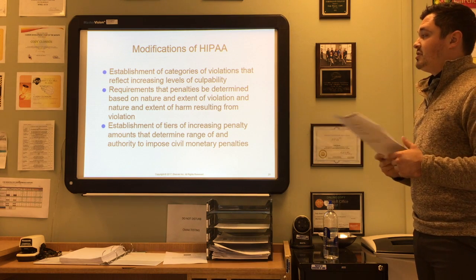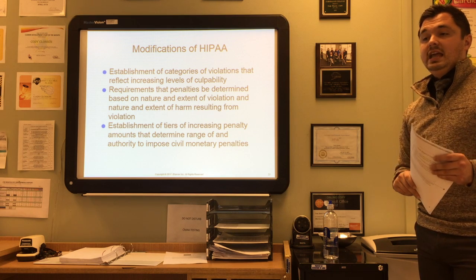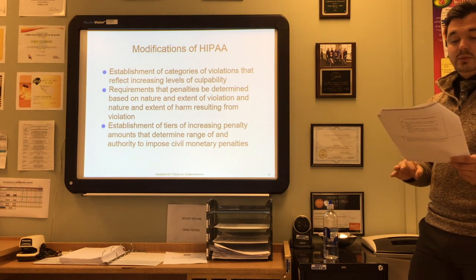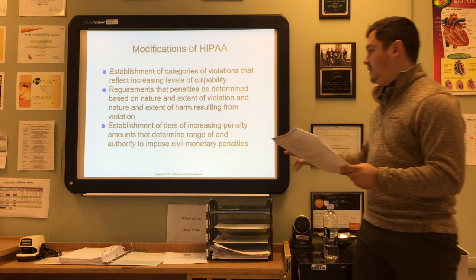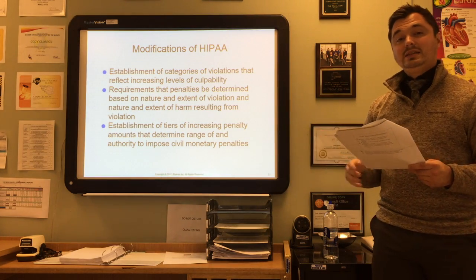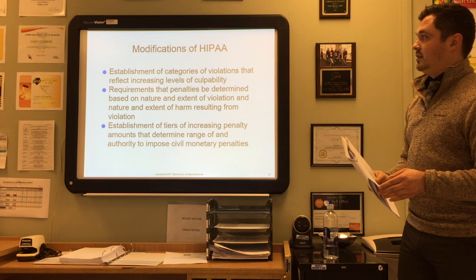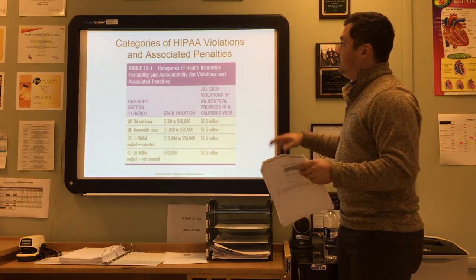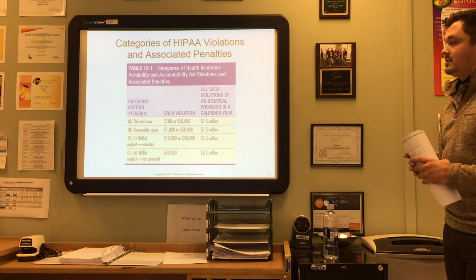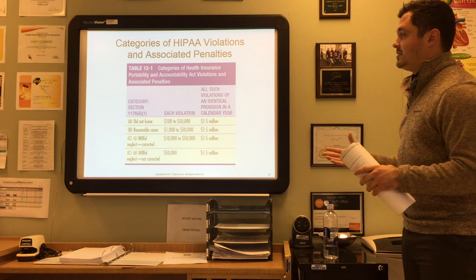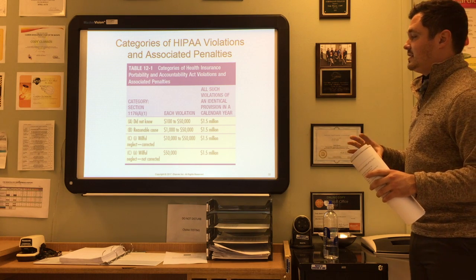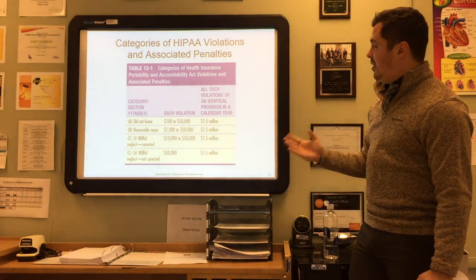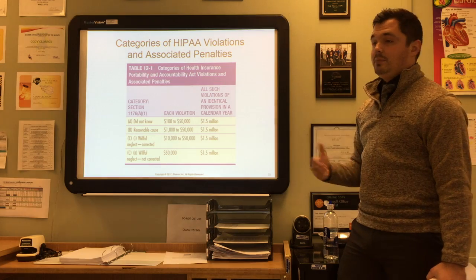Providers can expect reductions in the amounts they are paid for Medicare and Medicaid if they are not in compliance with HIPAA. There are also tiers of increasing penalty amounts that determine the range of civil monetary penalties. Providers must use a system for tasks such as e-prescribing or computerized physician/provider order entry (CPOE). On page 203 in the textbook, you'll see the categories of HIPAA violations and associated penalties, which can range from a $100 violation up to a $1.5 million violation.